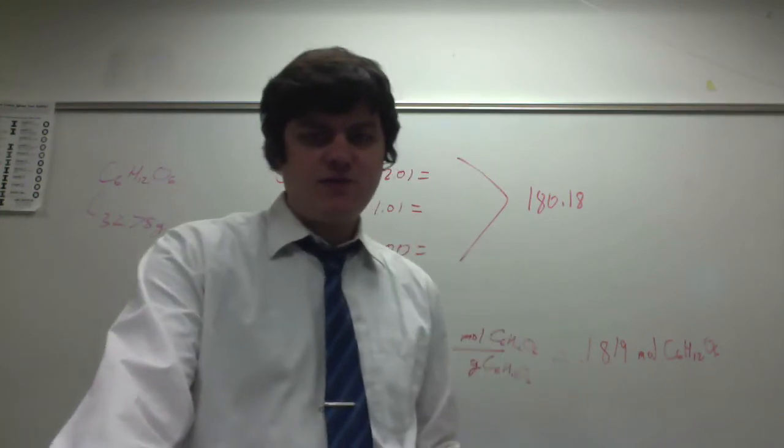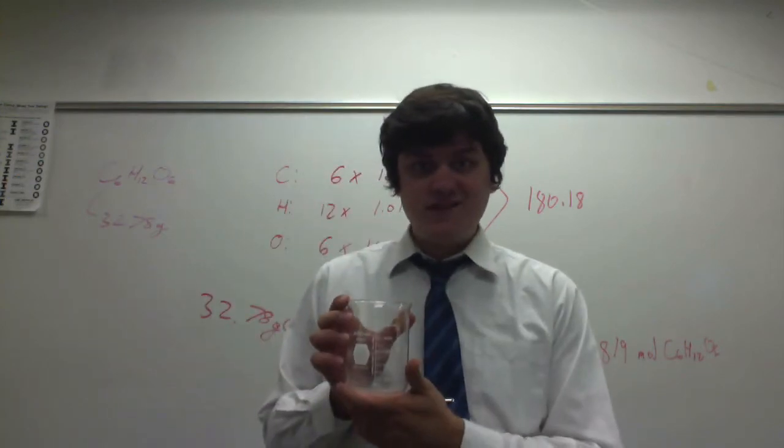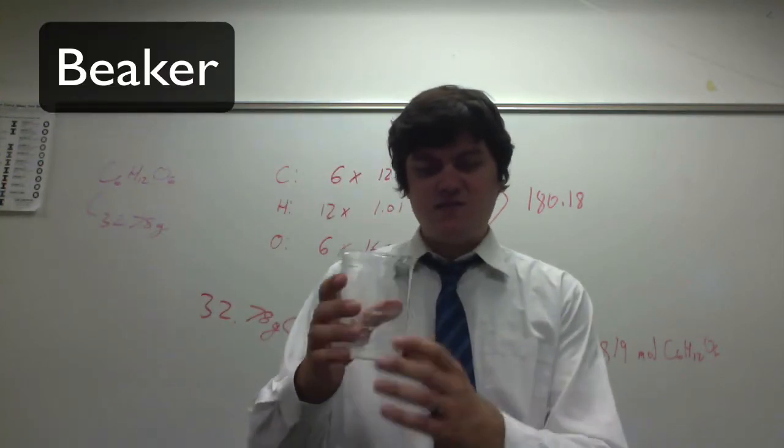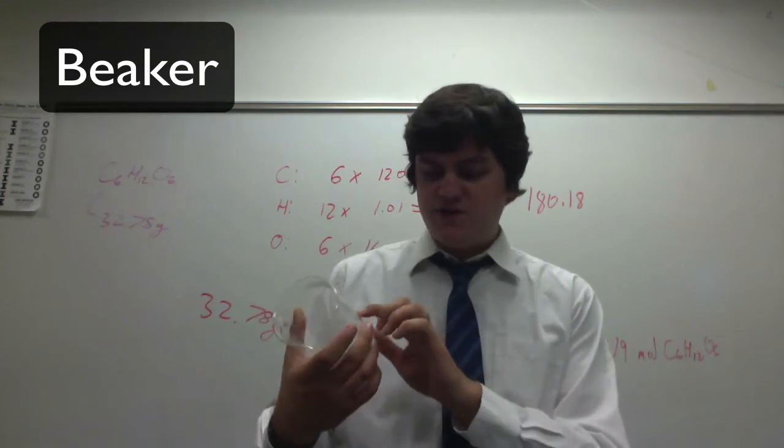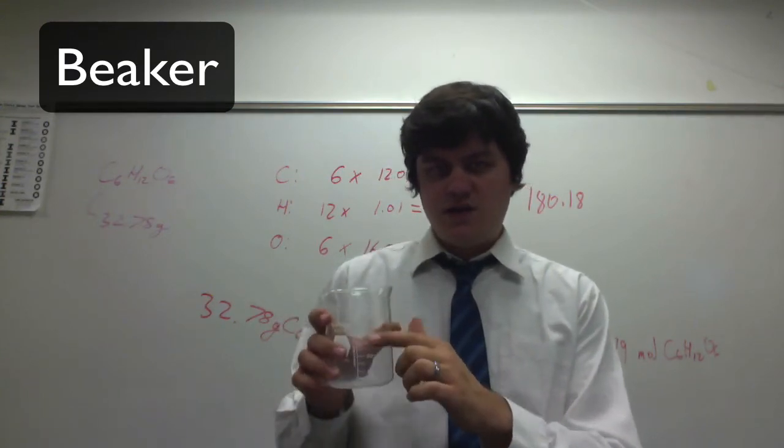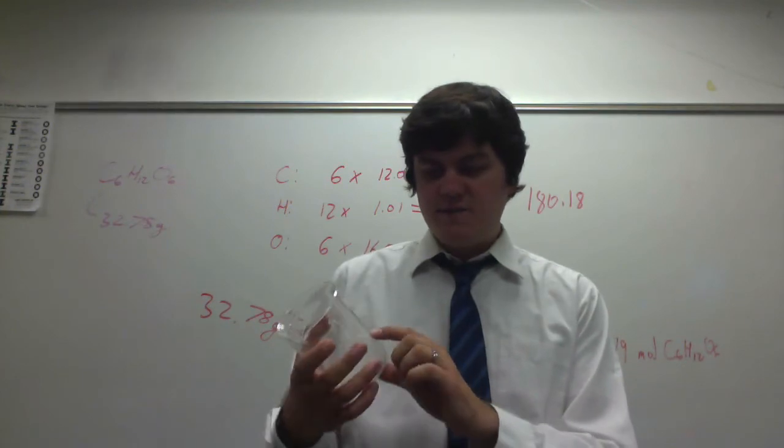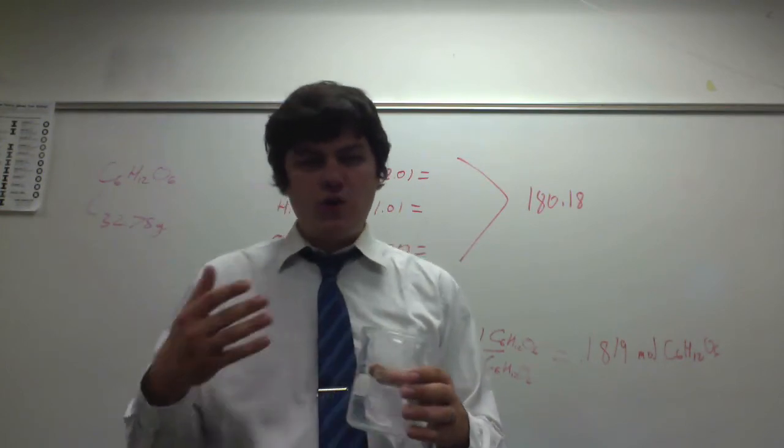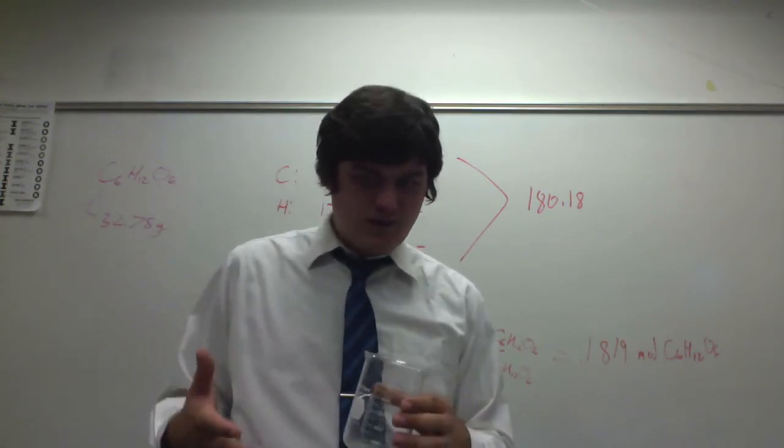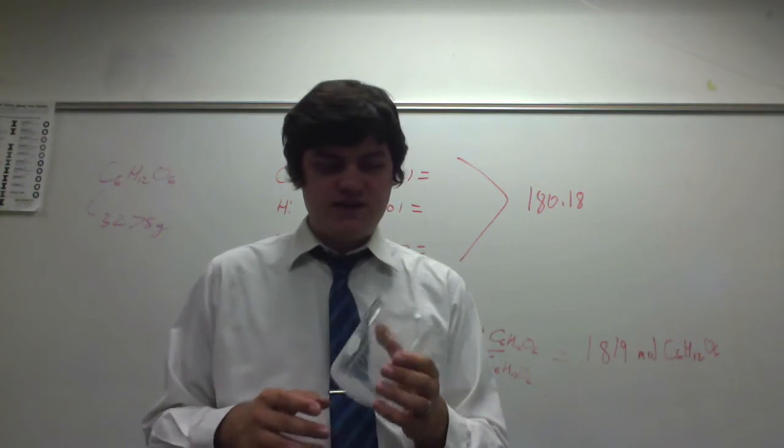The first thing that we'll be looking at is a beaker. So a beaker is just a cylinder that is designed to hold liquid. It does have gradations along the side here that do help us measure. This is not the most precise measuring device, so it's more to hold typically a liquid while we are using it in an experiment.